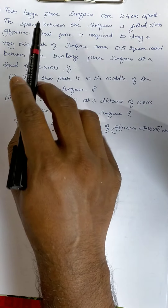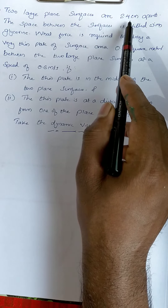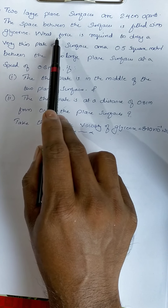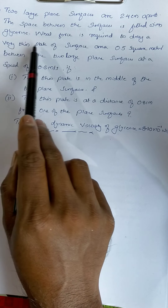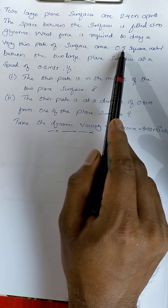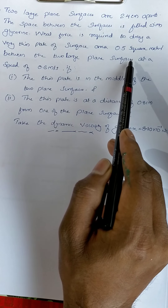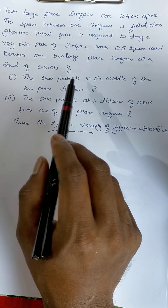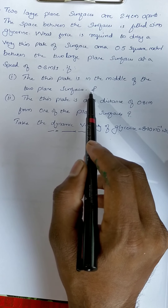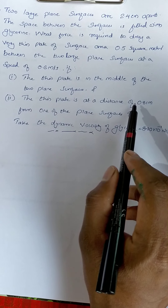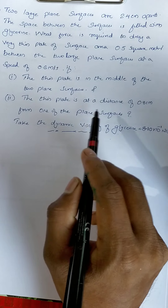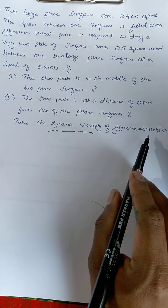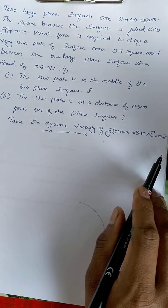Our question is: two large plane surfaces are 2.4 cm apart. The space between the surfaces is filled with glycerin. What force is required to drag a very thin plate of surface area 0.5 square meter between the two large plane surfaces at a speed of 0.6 meter per second? First case: the thin plate is in the middle of the two plane surfaces. Second case: the thin plate is at a distance of 0.8 cm from one of the plane surfaces. Dynamic viscosity of glycerin is 8.10 × 10⁻¹ N·s/m².